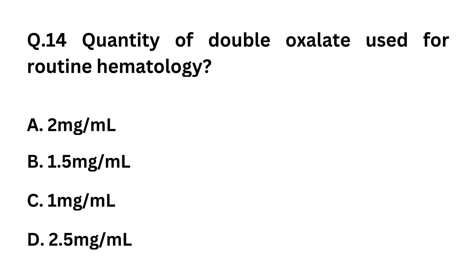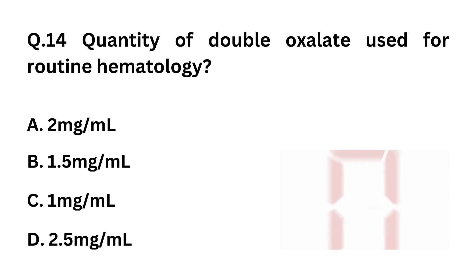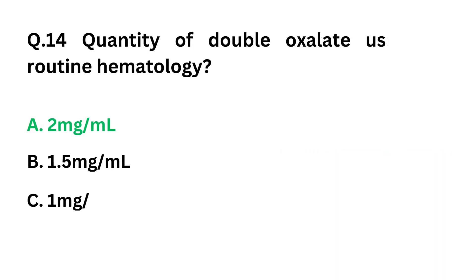Question 14: What is the quantity of double oxalate used for routine hematology? Option A: 2 mg/ml. Option B: 1.5 mg/ml. Option C: 1 mg/ml. Option D: 2.5 mg/ml. The correct answer is Option A: 2 mg/ml.